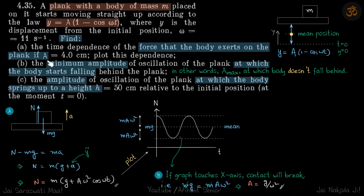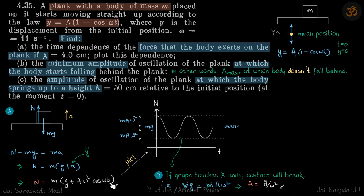We need to find the force the body exerts on the plank — this is the normal reaction N. Drawing the free body diagram with y taken upward, acceleration is also upward, giving: N - mg = ma, where a = d²y/dt². Since y is known, we differentiate twice.